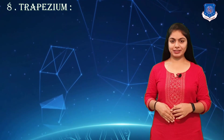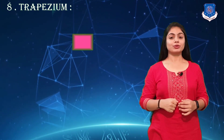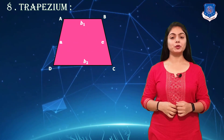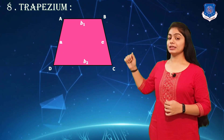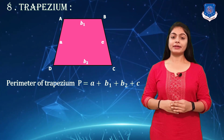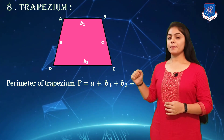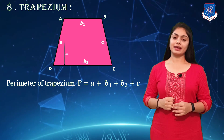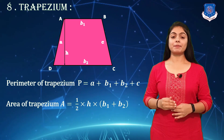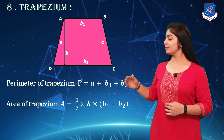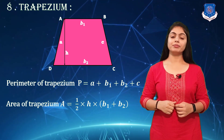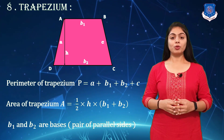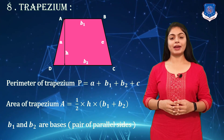Our next plane figure is the trapezium. You can see the figure — b₁ and b₂ are both parallel lines. The perimeter of a trapezium is a + b₁ + b₂ + c. The area of a trapezium is (1/2) × h × (b₁ + b₂), where b₁ and b₂ are the parallel bases.